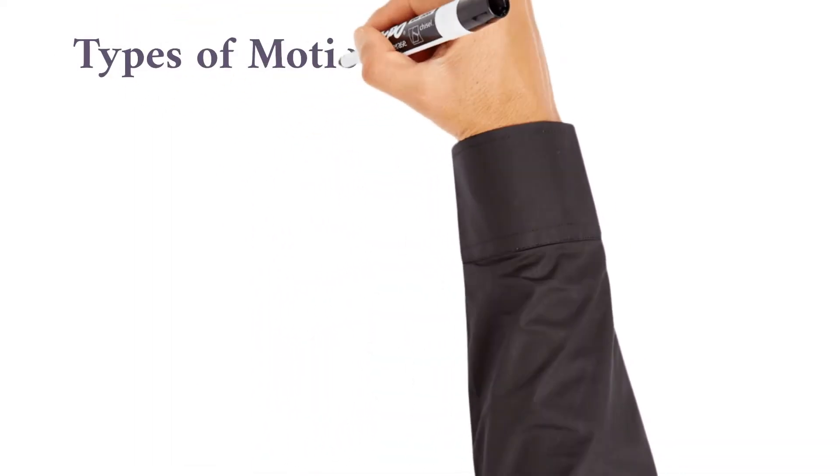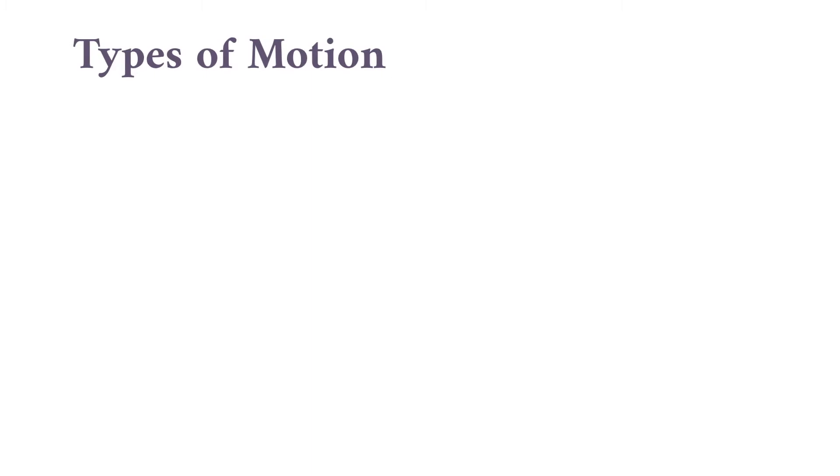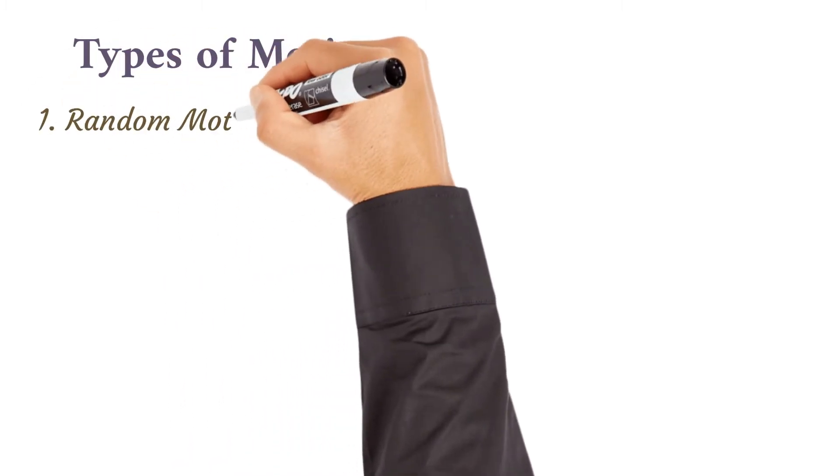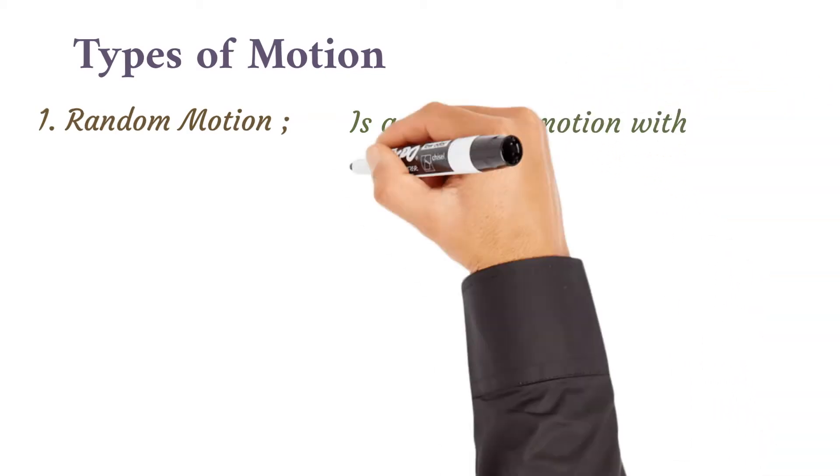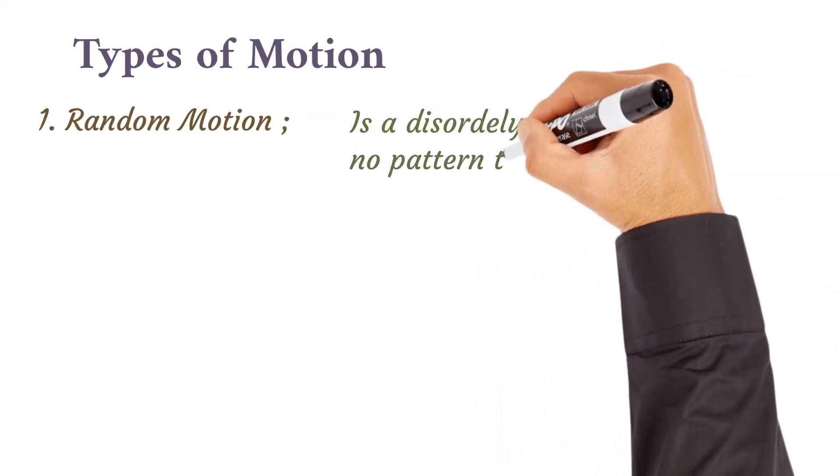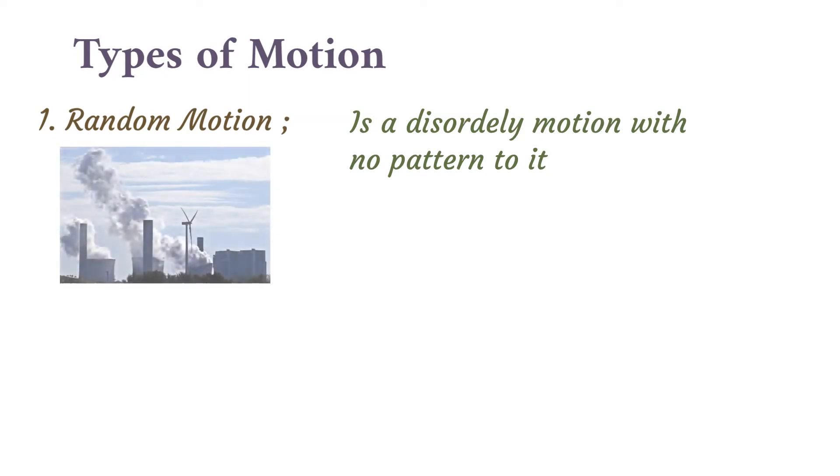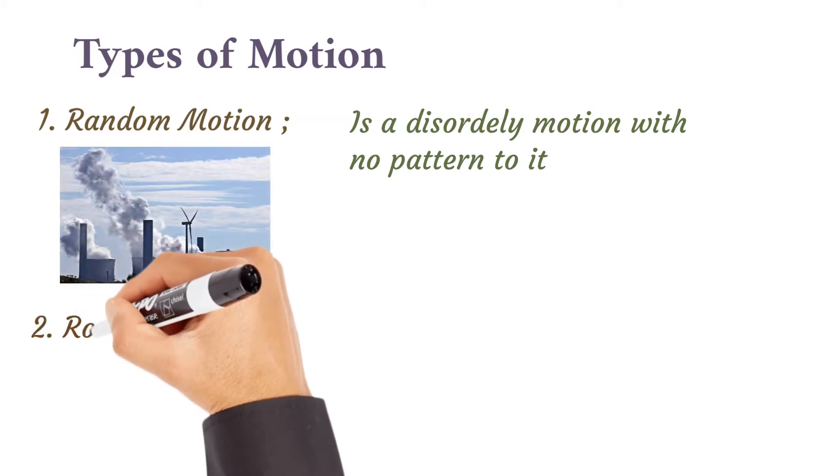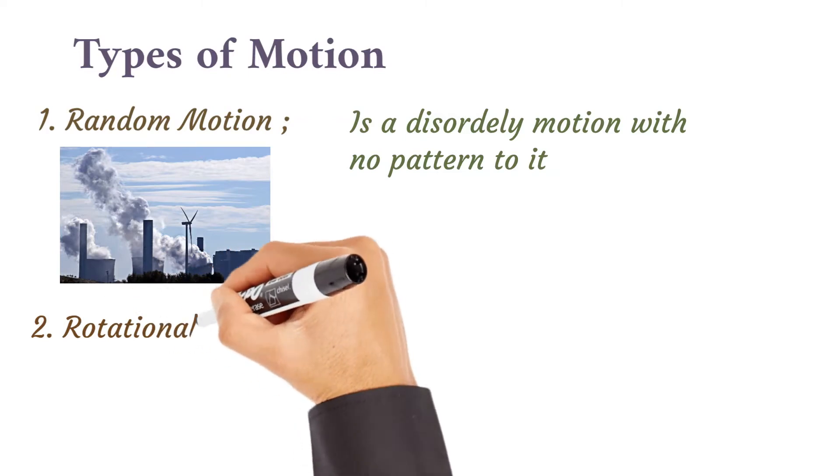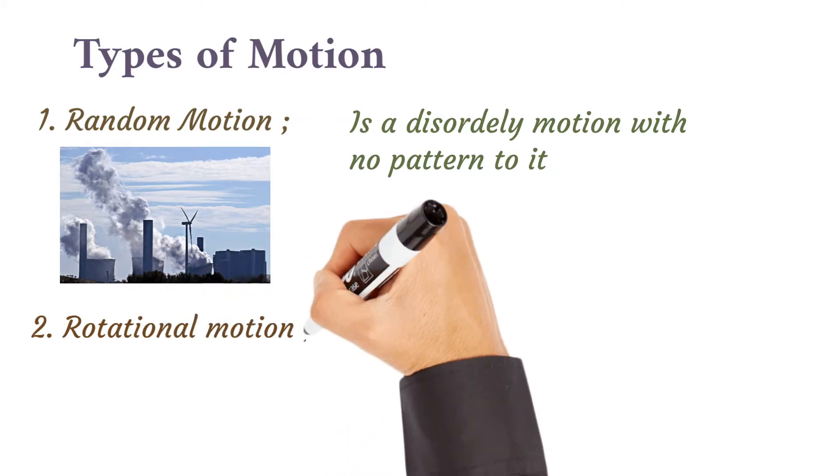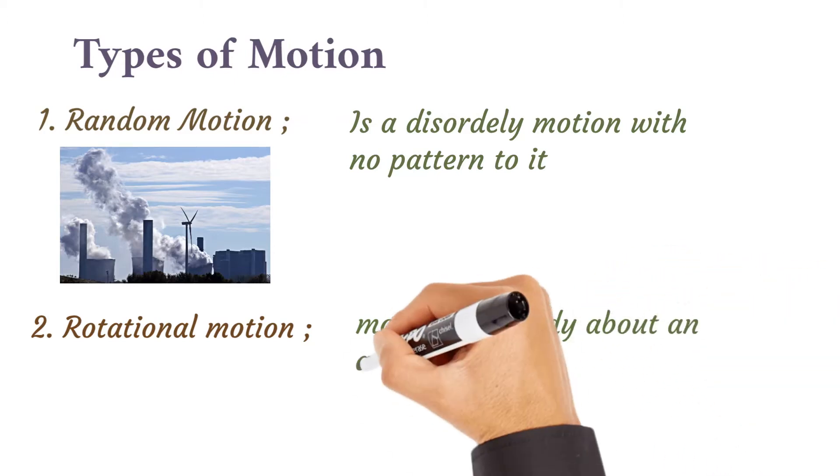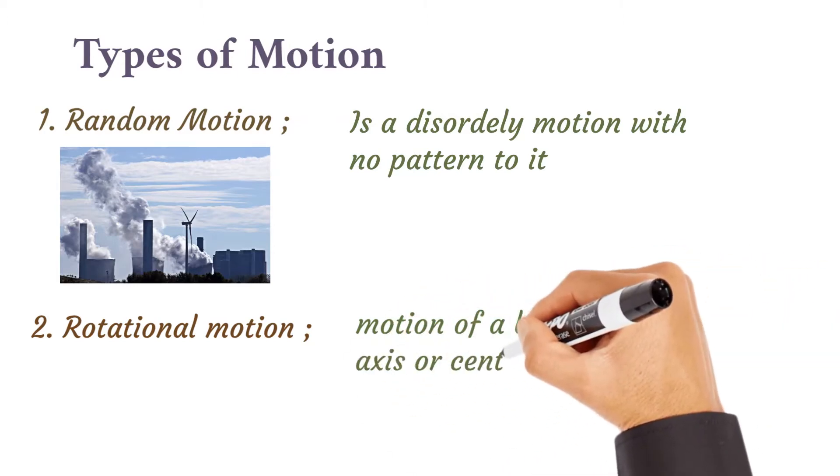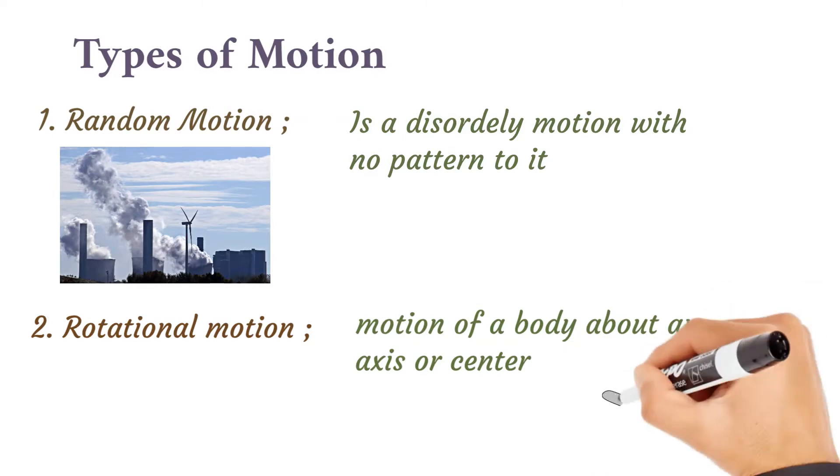Types of motion - we're going to look at five of them. First is random motion, a disorderly motion with no pattern to it. For example, dust particles or smoke particles in air. Number two, rotational motion, the motion of a body about an axis or a center. It moves in a cycle. Example is the motion of the ceiling fan in our houses or the standing fan.